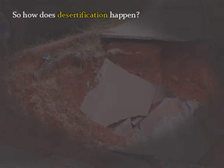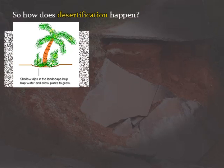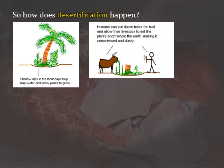So how does desertification happen? Here is a simple diagram: there are shallow dips in the landscape that are useful for trapping water and allowing plants to grow in semi-arid areas. Humans then come along and cut down the trees for fuel and allow their livestock to eat the plants.